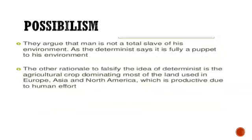It is argued that man is not a total slave of his environment as a determinist says, making him fully a puppet. When it rains and you need to complete work, you find a middle path — you take your umbrella and get your work done. You don't wait two days for the rain to stop; you adapt and act.